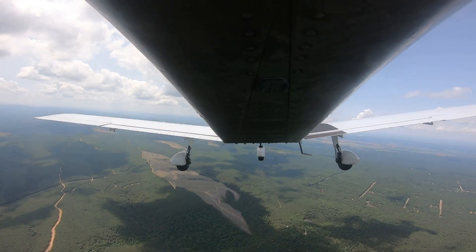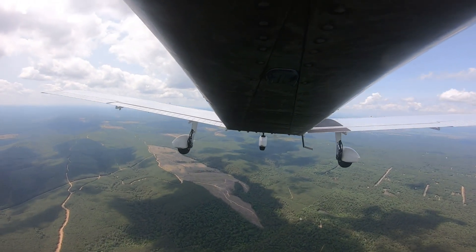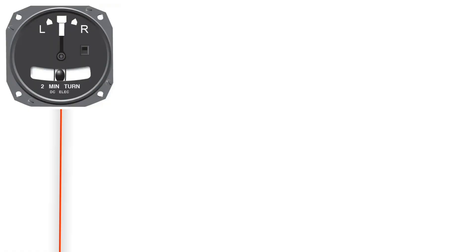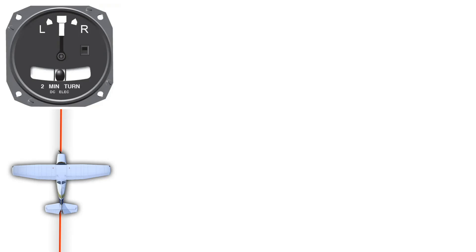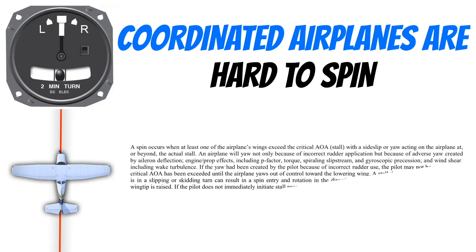So if you do stall, you don't even have to think about it — your nose is already going to be aligned. This is what we're talking about when we say we want the airplane to be coordinated: the tail is aligned with the airplane's direction of travel. I truly believe that it's almost impossible to spin an airplane that is coordinated, and I'll show you why I believe that.